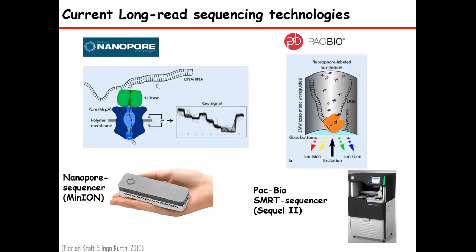There are two long-read sequencing technologies available: nanopore sequencing technology and PacBio. Nanopore works on ionic flow changes recorded in a graphical manner and then base called. PacBio uses a sequencing-by-synthesis model, where a polymerase synthesizes in a chamber, and when fluorescently labeled nucleotides are incorporated, you record those color changes, which are then converted into nucleotides. This is how PacBio works.